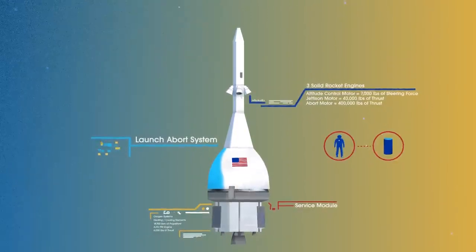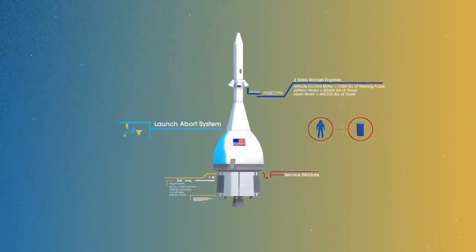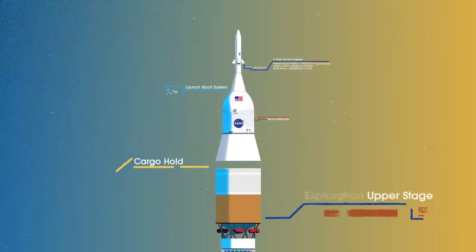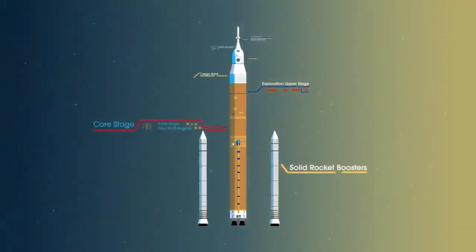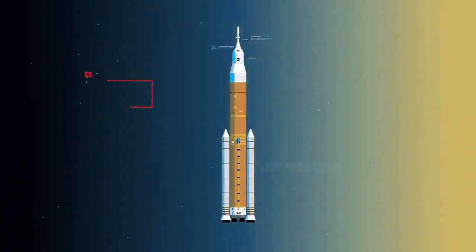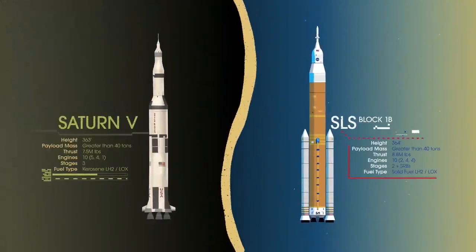To accomplish the task of launching our crew and heavy payloads, NASA is building the Space Launch System, comprising of a cargo hold, an exploration upper stage, a massive core stage, and two extended solid rocket boosters. Altogether, this is the world's most powerful rocket, and it exceeds the legendary Saturn V of the Apollo era in numerous ways.